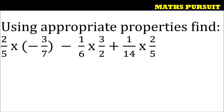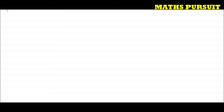Let us see how we can solve this equation. The equation is 2/5 × (-3/7) - 1/6 × 3/2 + 1/14 × 2/5.